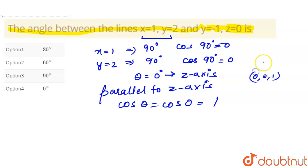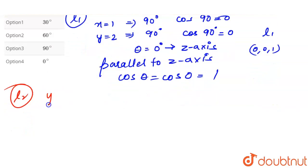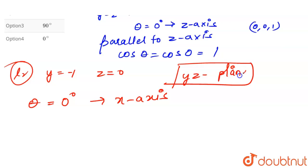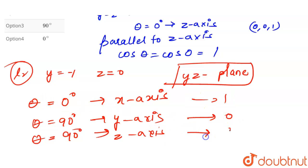So the direction cosines of the first line are (0, 0, 1). For line 2, we have y=-1 and z=0, meaning the line lies in the y-z plane. It is parallel to the x-axis, making an angle of 0 degrees with x, and 90 degrees with both y and z. So the direction cosines for line 2 are (1, 0, 0).